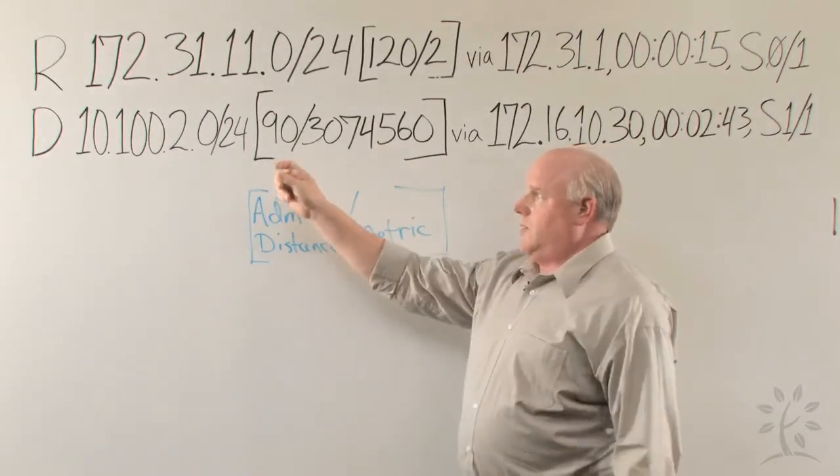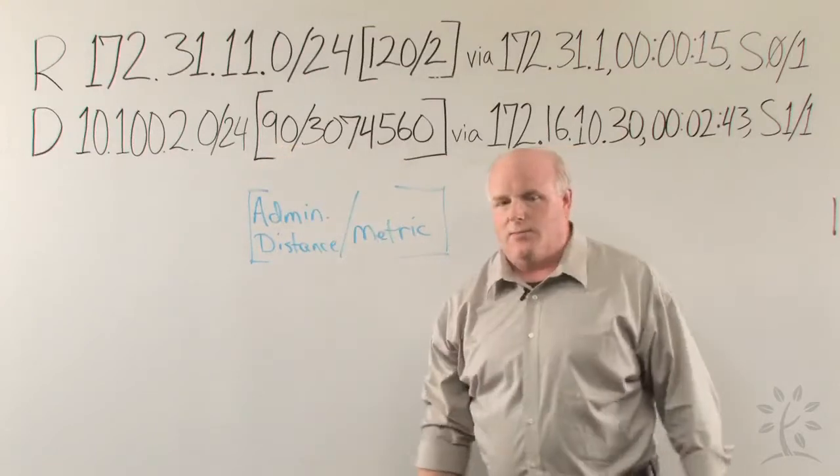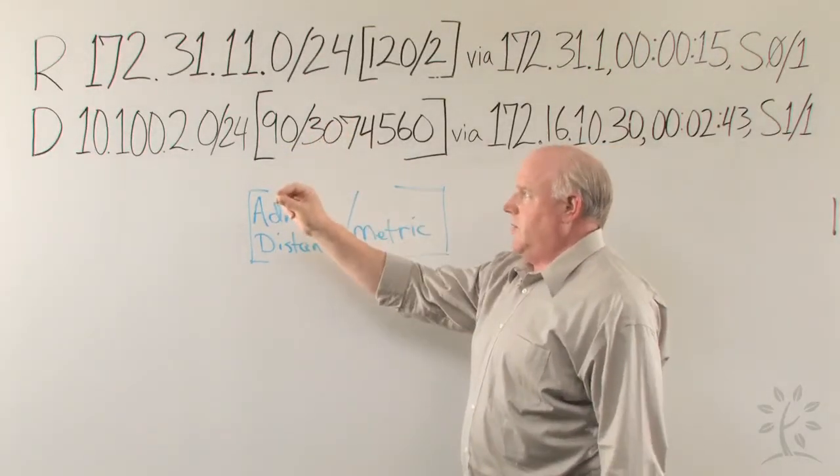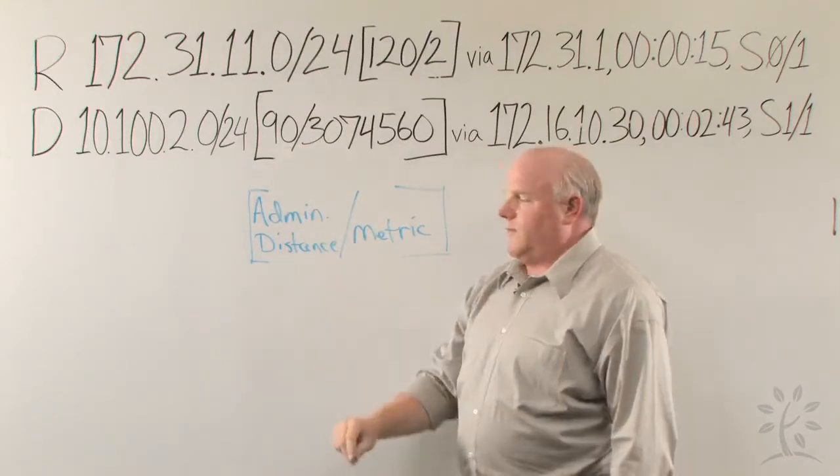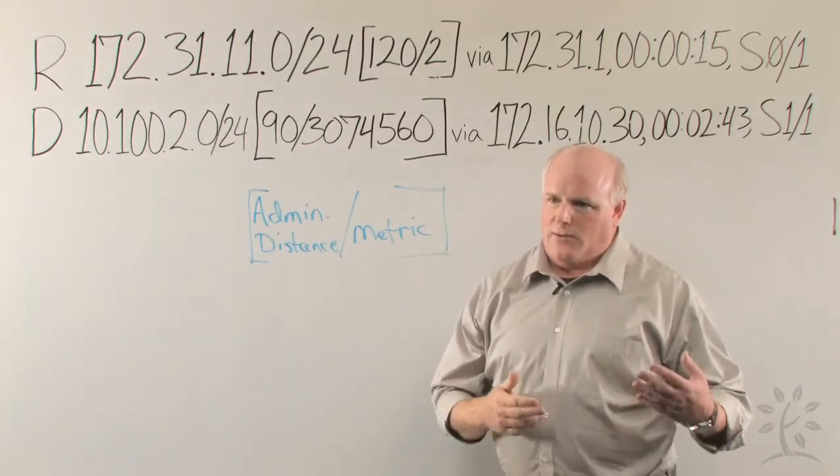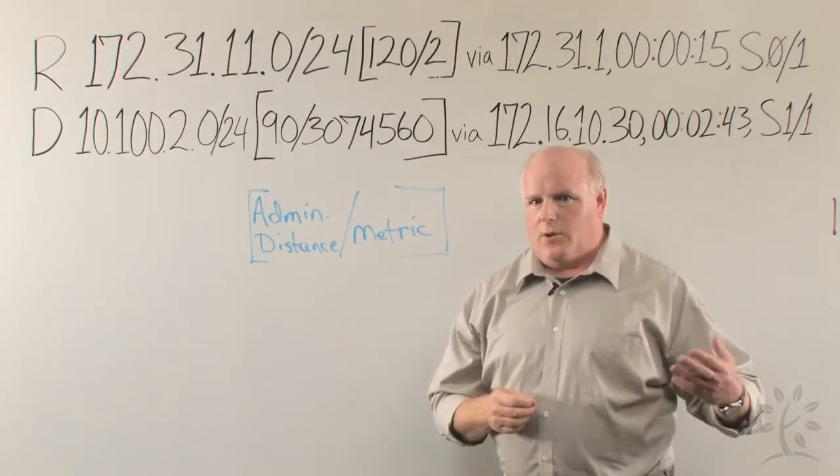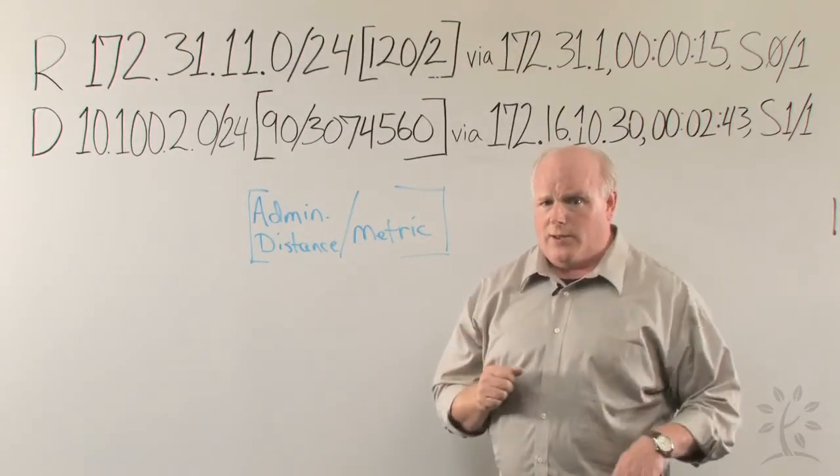But what we need to know about most here is the administrative distance is more reliable, because it is less, than the RIP protocol. The administrative distance of 90 tells us that we can count on this route being a little more useful and reliable in the long run than the RIP route we'd seen earlier.